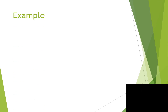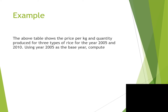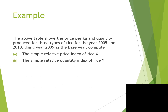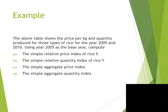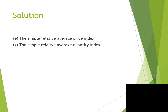Example: The table shows the price per kilogram and quantity produced for 3 types of rice — Eggs, Y, and Z — for the years 2005 and 2010. Using 2005 as the base year, compute: (A) the Simple Relative Price Index for rice Eggs; (B) the Simple Relative Quantity Index for rice Y; (C) the Simple Aggregate Price Index; (D) the Simple Aggregate Quantity Index; (E) the Simple Relative Average Price Index; (F) the Simple Relative Average Quantity Index.